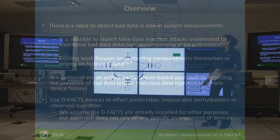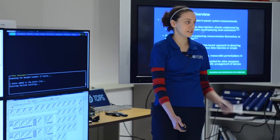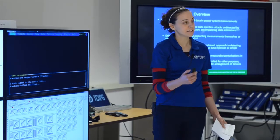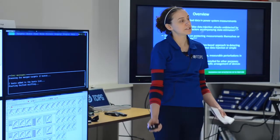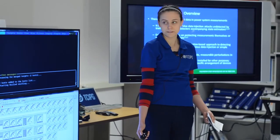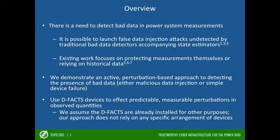The motivation for this demo is that there's a need to detect bad data in power system measurements. It's been shown that it's possible to launch false data injection attacks that could remain undetected by the bad data detectors accompanying traditional state estimators. Existing work on mitigating these attacks focuses on either protecting the measurements themselves or leveraging historical data, but here we're demonstrating an active perturbation-based approach to detecting the presence of bad data, which could be either malicious data injection or simple device failure.